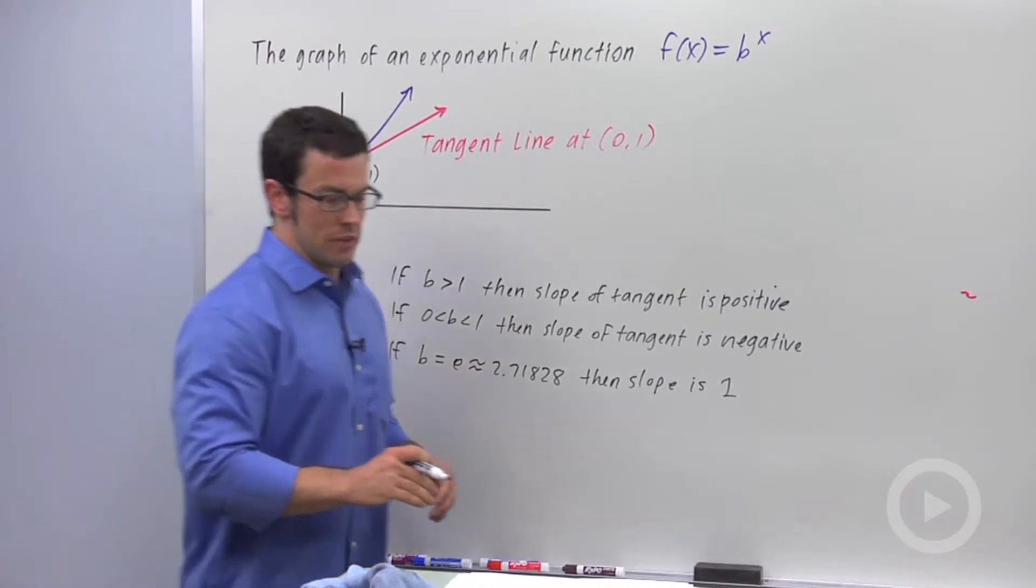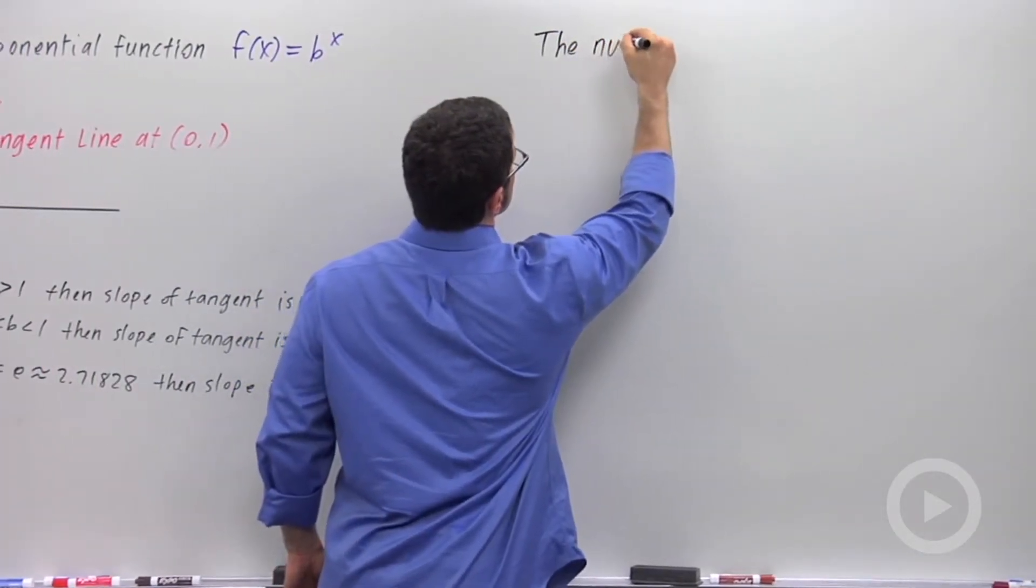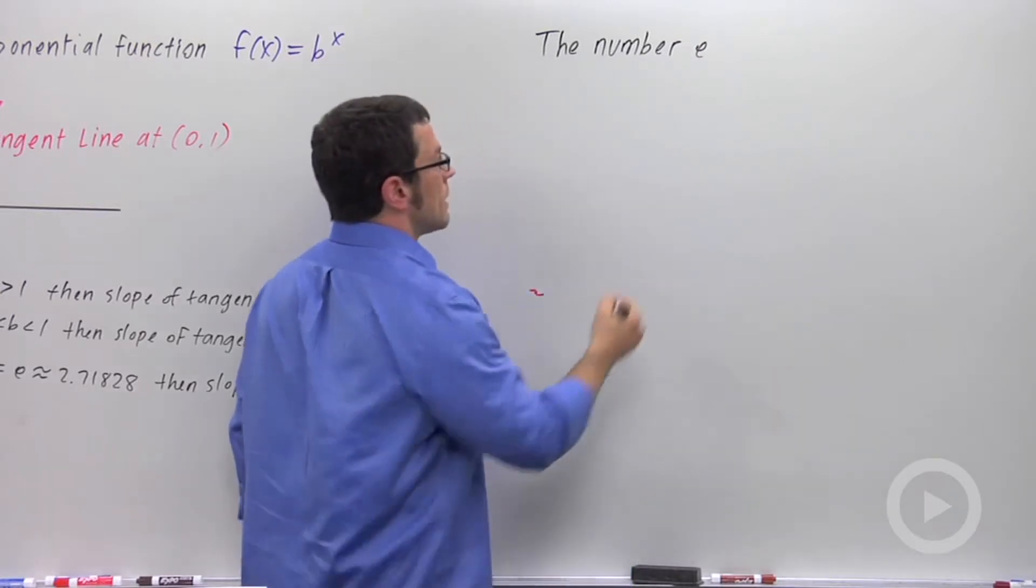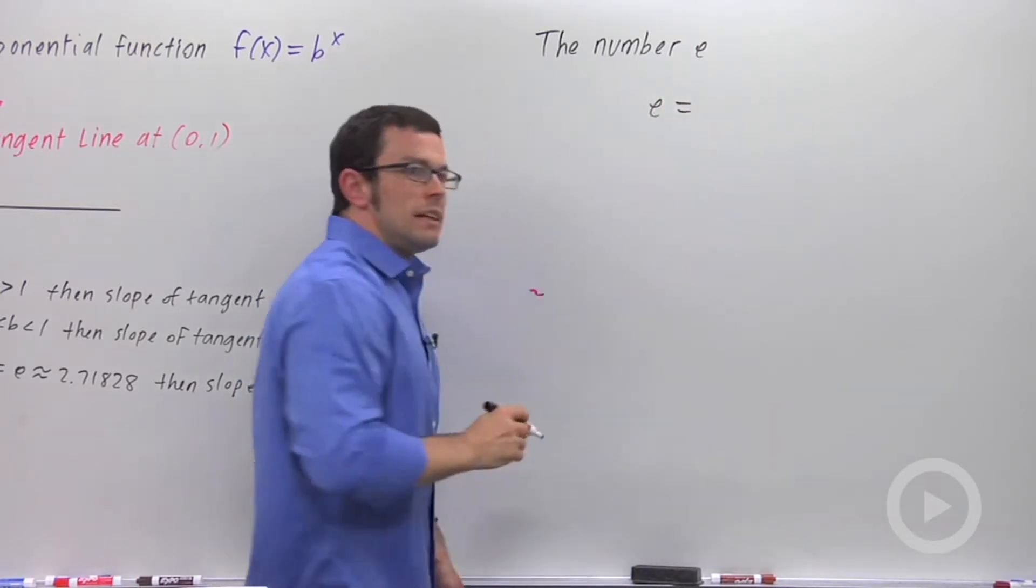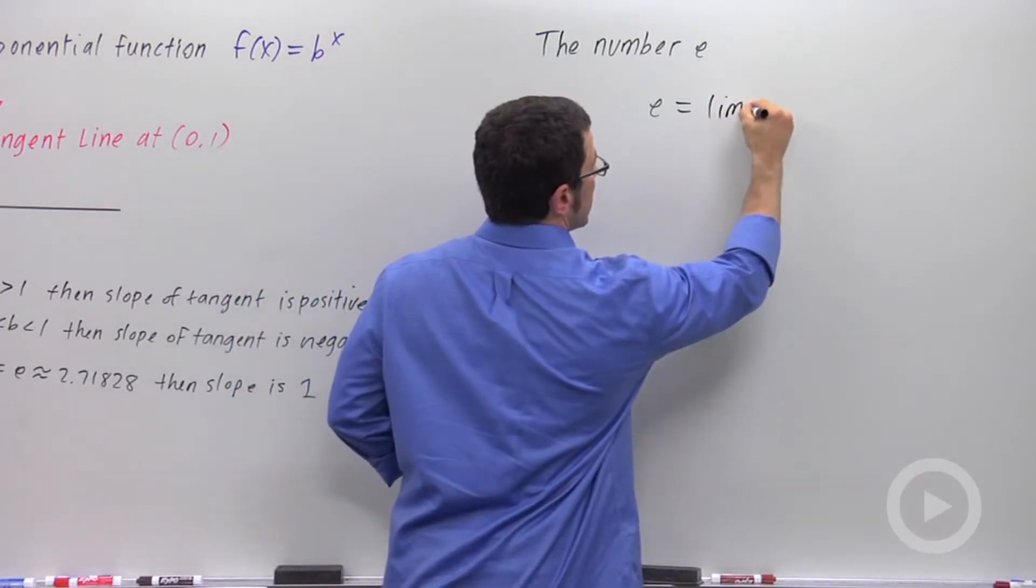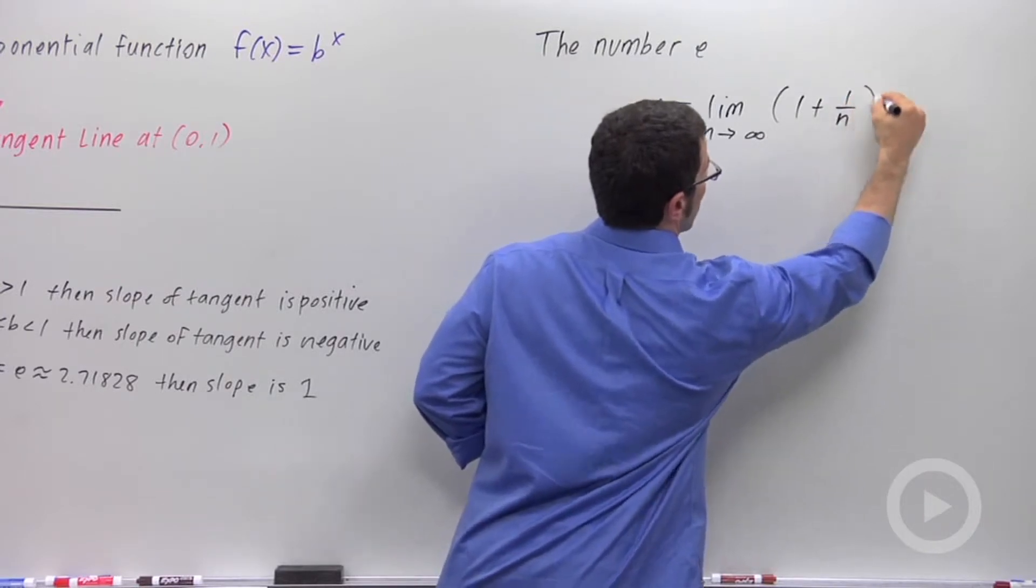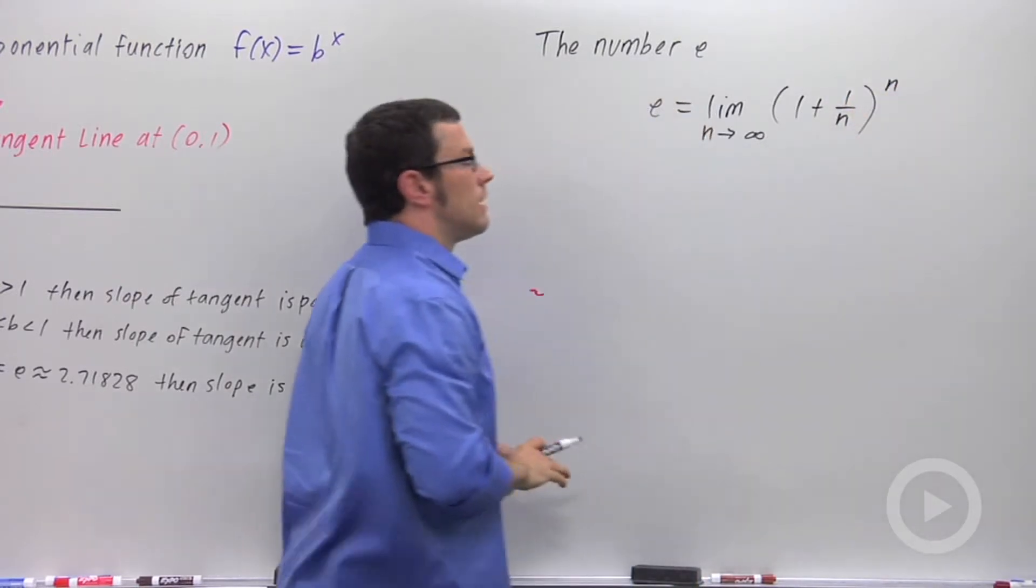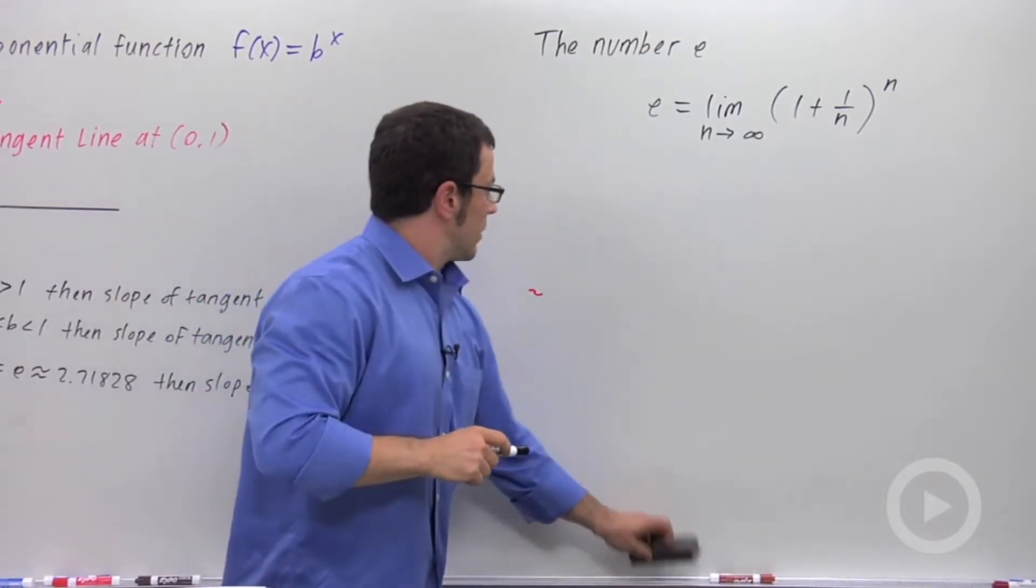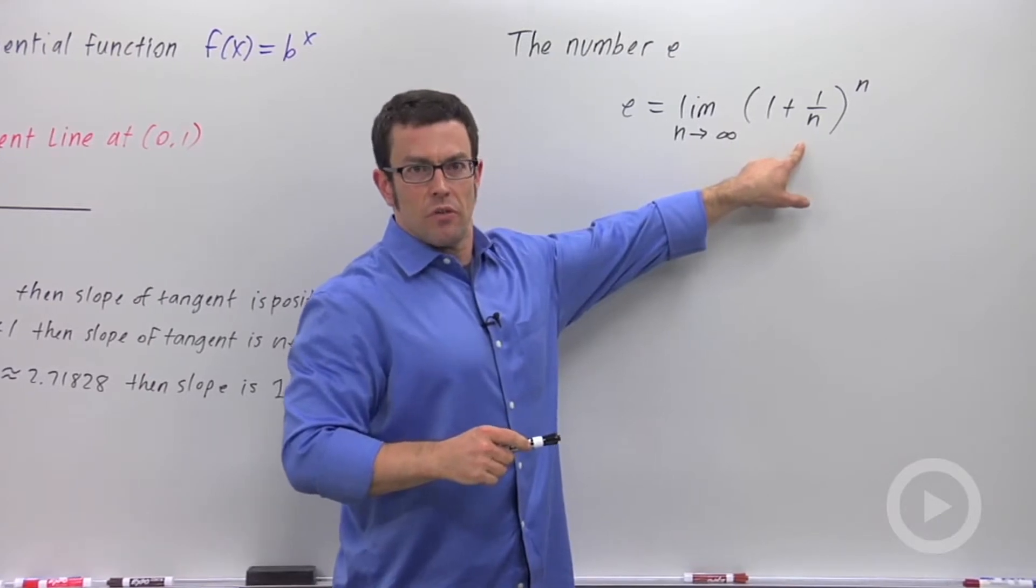Now let me give you a definition for the number e. e has a very complicated definition. It's a limit as n approaches infinity of (1 plus 1 over n) to the n. Now to help you understand this definition a little bit better, I'm going to calculate some values for this expression (1 plus 1 over n) to the n.